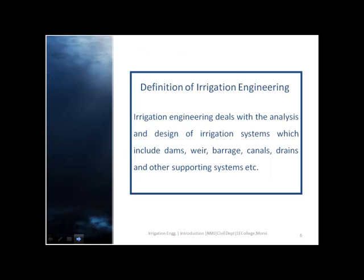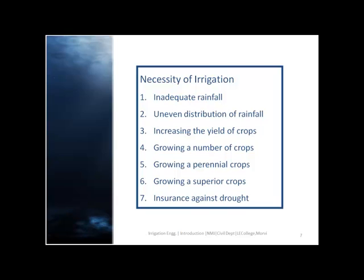Definition of irrigation engineering: Irrigation engineering deals with the analysis and design of irrigation systems which include dams, weirs, barrages, canals, drains and other supporting systems. What is the necessity of irrigation?